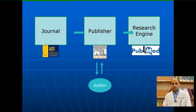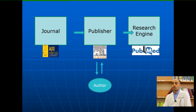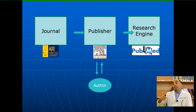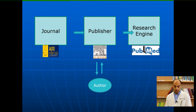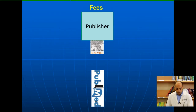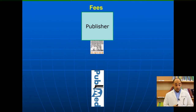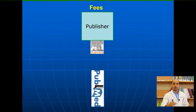A common mistake made by many people is saying 'I want to publish on PubMed,' 'I want to publish on Scopus,' or 'I want to publish on Google Scholar.' Those are not publishers — they are research engines only. This is important to understand before the next lecture on PubMed.